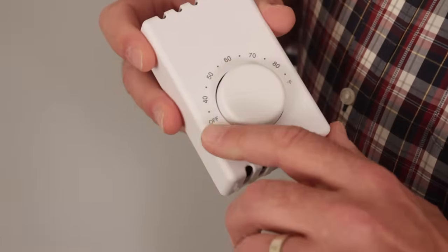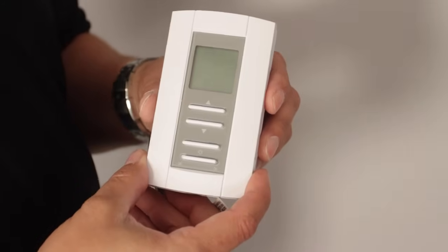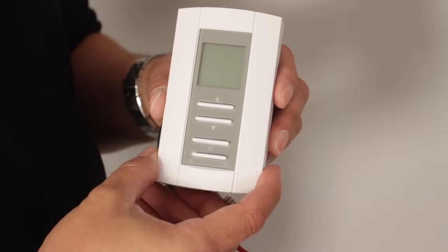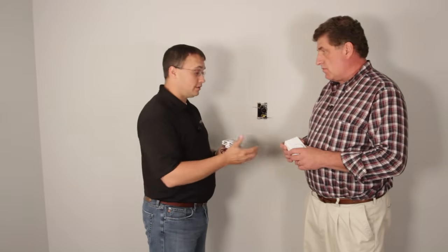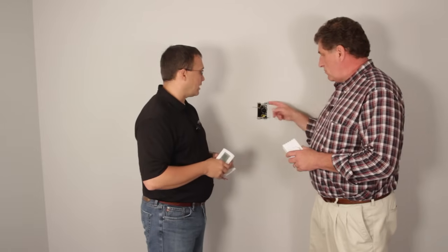One easy way to tell the difference between single pole and double pole is that double pole will have a true off. Now whether you install the digital or the mechanical, the wiring process is the same. Definitely check the owner's guide, and that'll tell you how to wire each individual stat.